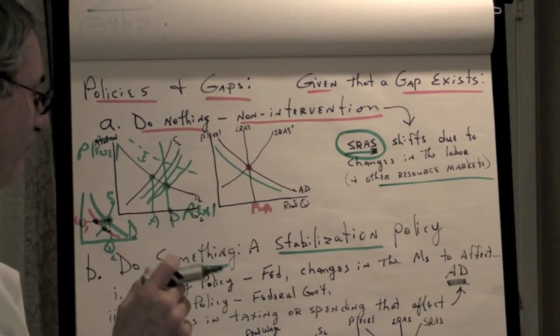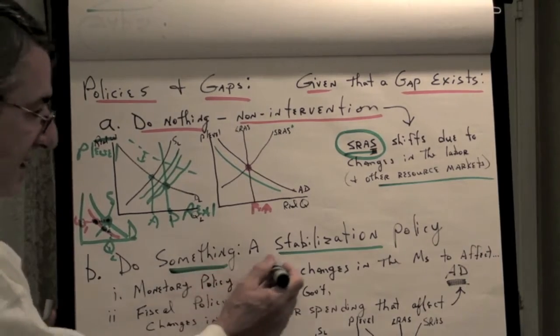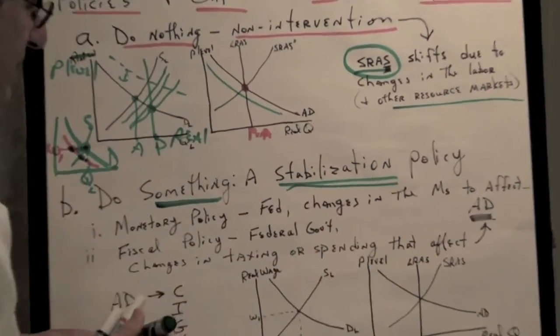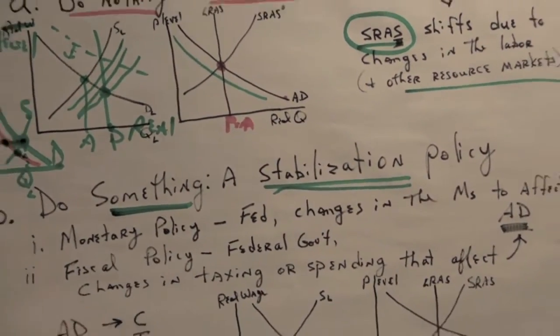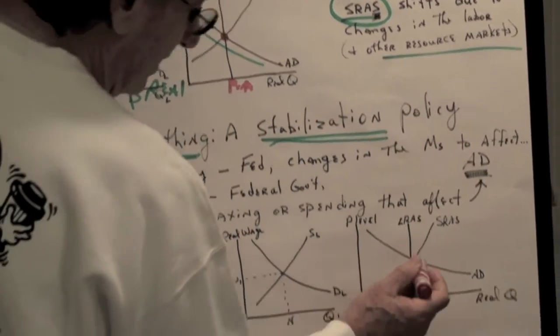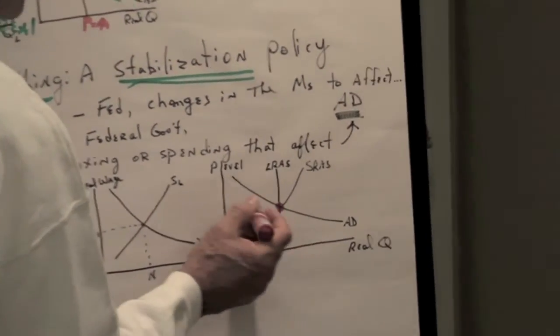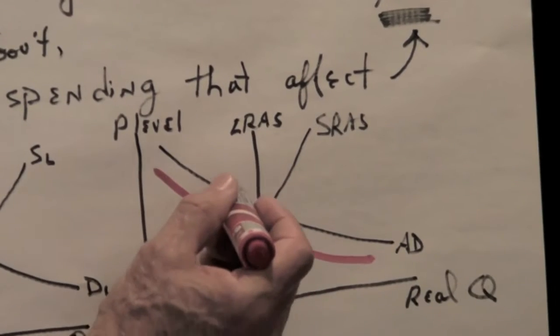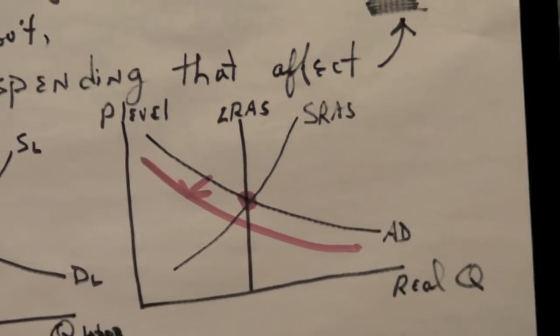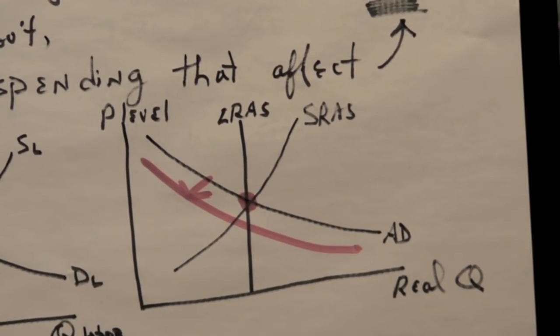But what if we choose to do something? This is called a stabilization policy. So let's assume the same bit, and that is, we are in equilibrium, and something happens. In this case, we move into a recession, aggregate demand shifts to the left.